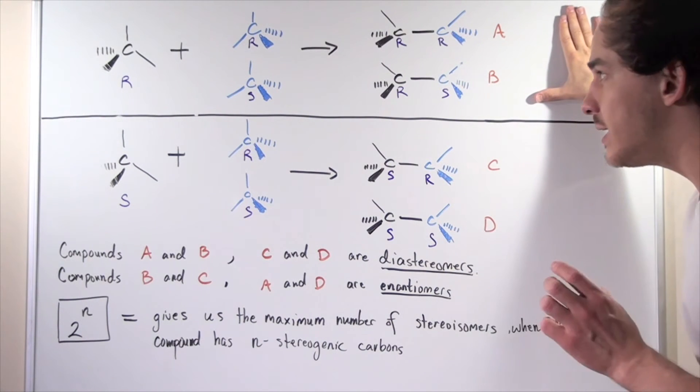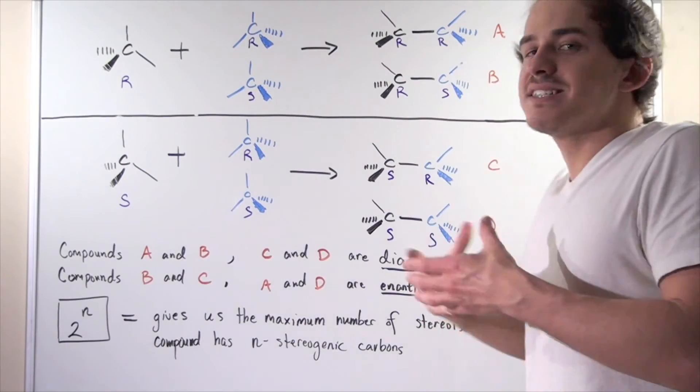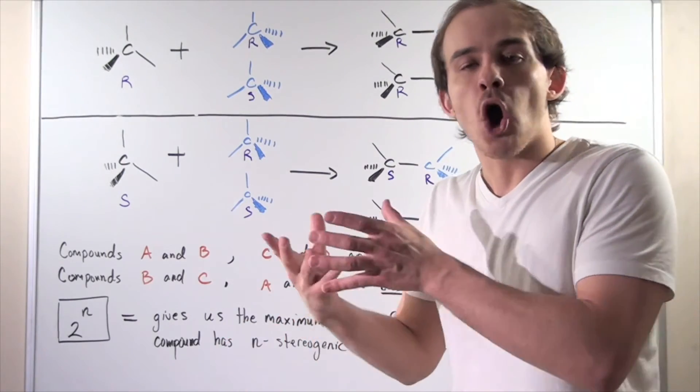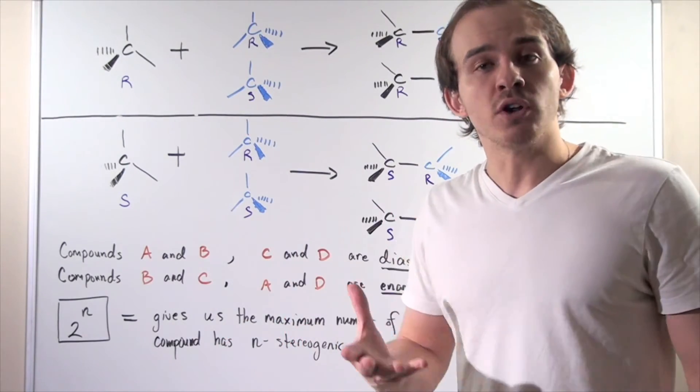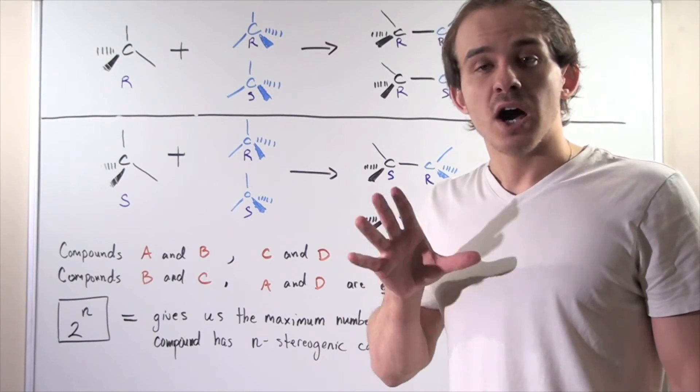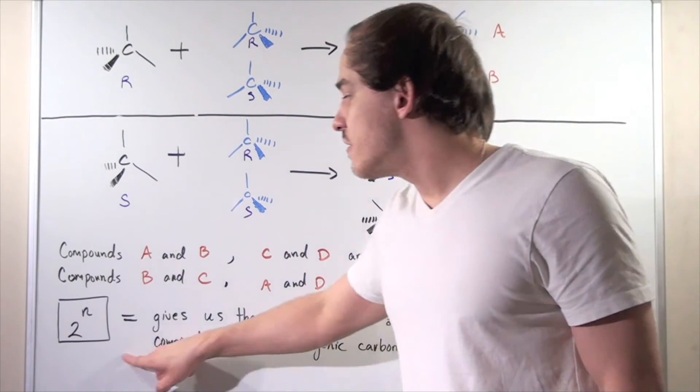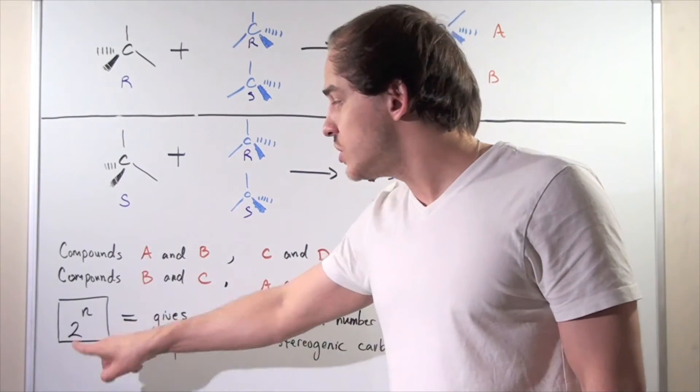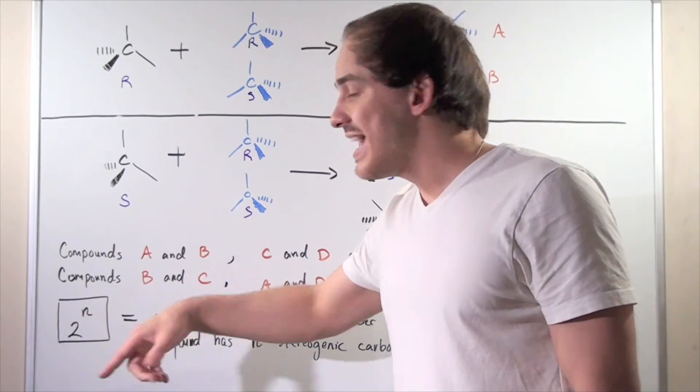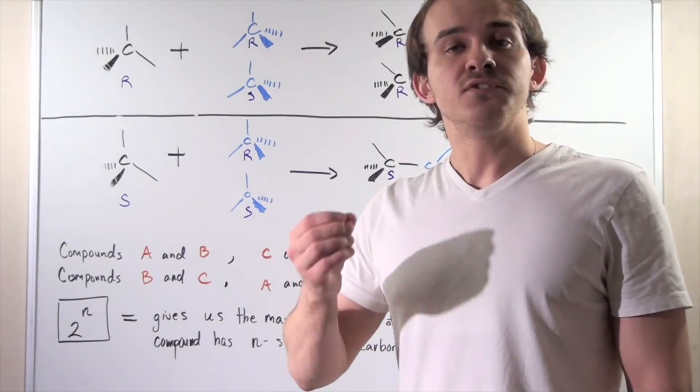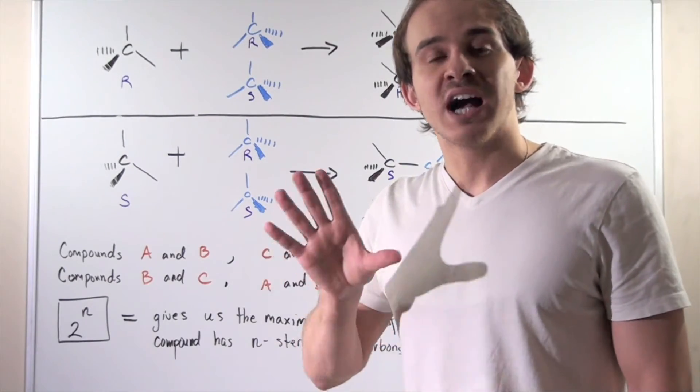And in fact, generally speaking, whenever we have some number of stereogenic carbons to find the total or the maximum number of stereoisomers, we use the following formula. Two to the nth power, where n is simply the number of stereogenic carbons in your compound.